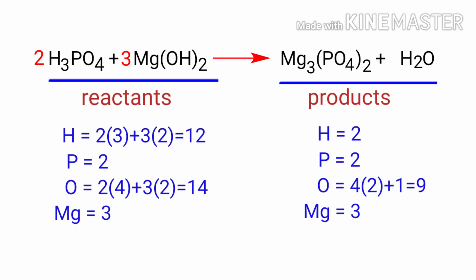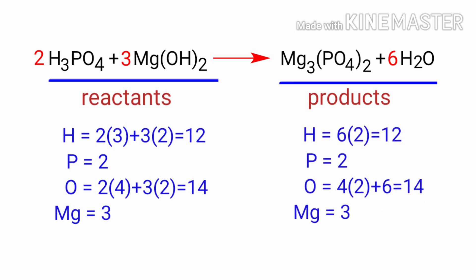Now we need to balance the hydrogen atoms. To do this we need to put a coefficient of 6 in front of H2O. The equation is now balanced.